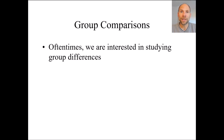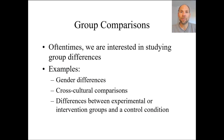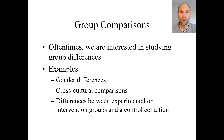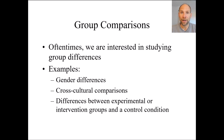Group comparisons are something we're often interested in in the social sciences. We often have different known groups that we want to compare — for example, gender differences on some construct like spatial abilities, intelligence, or anxiety — or we are interested in cross-cultural comparisons with regard to subjective well-being, or comparing an experimental and a control group for treatment effects. We often do that using methods such as a t-test, analysis of variance or ANOVA.